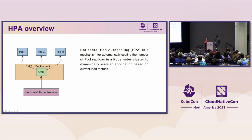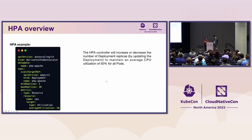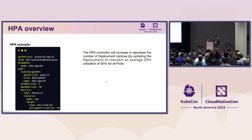It retrieves the metrics from either the resource metrics API or the custom metrics API. Here is an example of HPA. You can see that the number of replicas of this PHP Apache deployment will be increased or decreased to maintain an average of 50% CPU utilization, which means the number of replicas will be scaled up or scaled down if the average CPU utilization is above or below 50%.